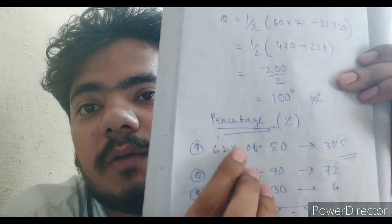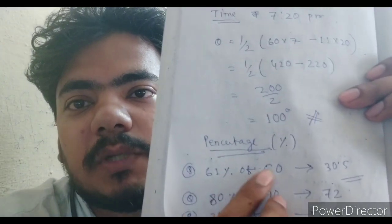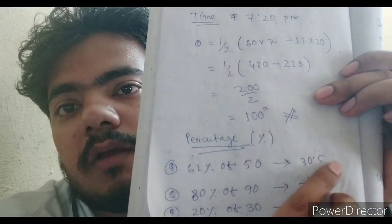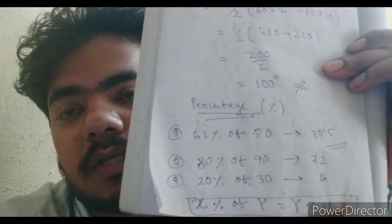Some percentages are very easy, but some will confuse you — like 61 percent of 50. If they ask 50 percent, you easily find the half. But for 61 percent of 50, it takes time unless you know the formula. The trick is: x percent of y equals y percent of x. So 20 percent of 30 equals 30 percent of 20. You don't know 61 percent of 50, but 50 percent of 61 is simply 30.5 — and that is your answer.